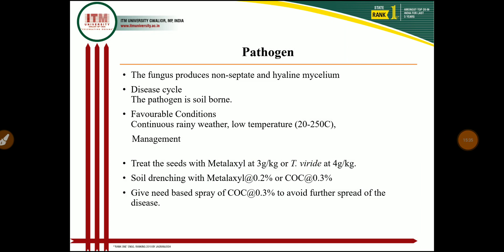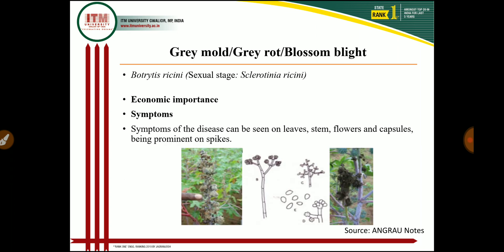For management of phytophthora blight: remove and destroy infected plant debris, and avoid low-lying and ill-drained fields for sowing. Give seed treatment with metalaxyl at 3 g/kg or Trichoderma viride at 4 g/kg. Control the disease by soil drenching with metalaxyl at 0.2 percent or copper oxychloride at 0.3 percent. If severe damage occurs, spray copper oxychloride at 0.3 percent to avoid further spread of the disease.